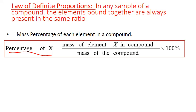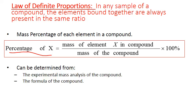Now you can determine the mass of the element and the mass of the total compound in one of two ways. They can be determined from experimental mass analysis of the compound itself, or if you know the formula of the compound, you can use the formula and formula masses to calculate your mass percent.